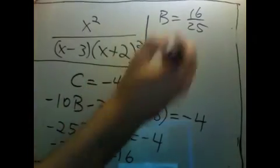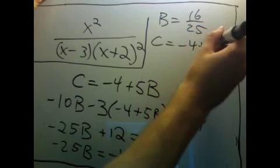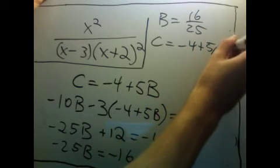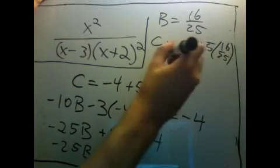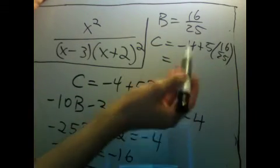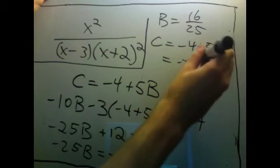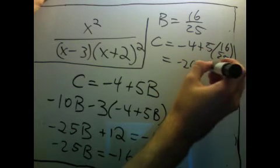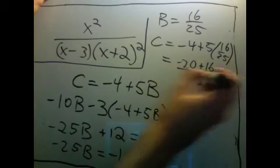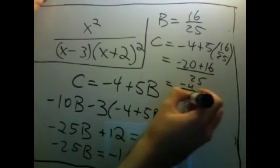Going here, c equals negative 4 plus 5 times 16 over 25, which is 16 over 5 minus 4. So I get minus 20 plus 16 over 25, which is negative 4 over 25.